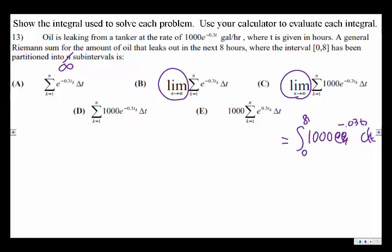I mean, they factored out the constant 1000. No, but they have a negative 0.3. Oh, this one's got the wrong thing. Yeah, so that's the one that makes that wrong.